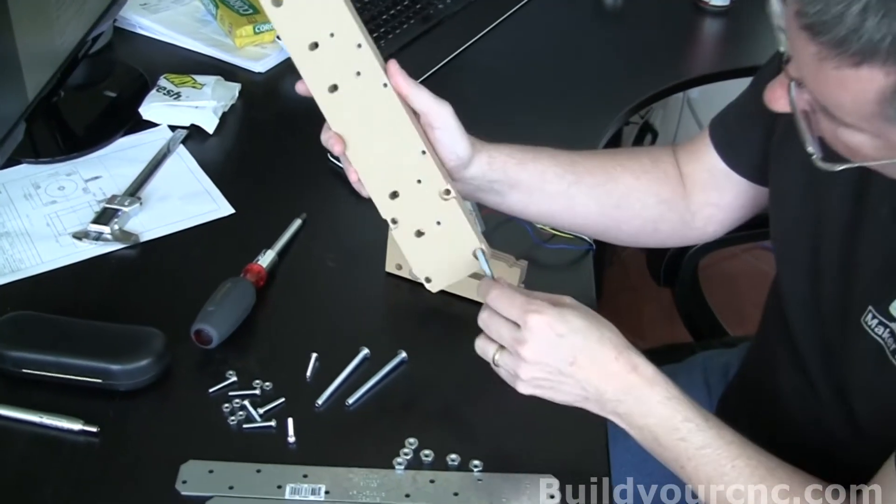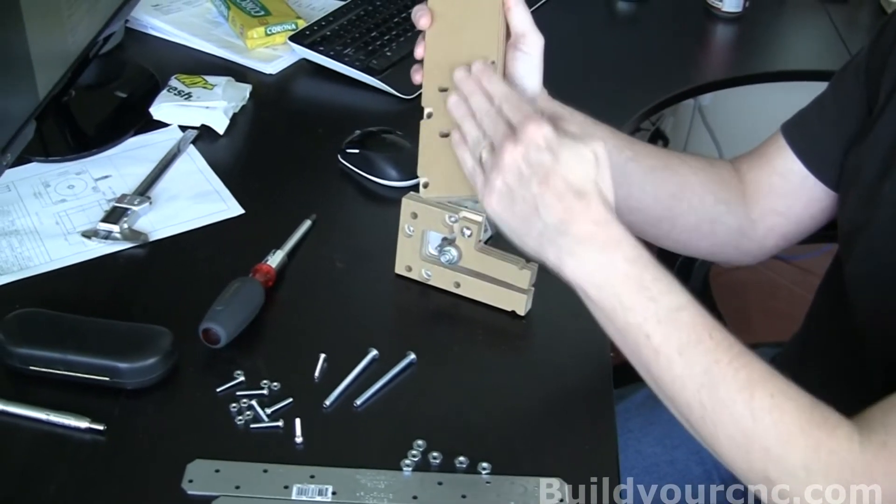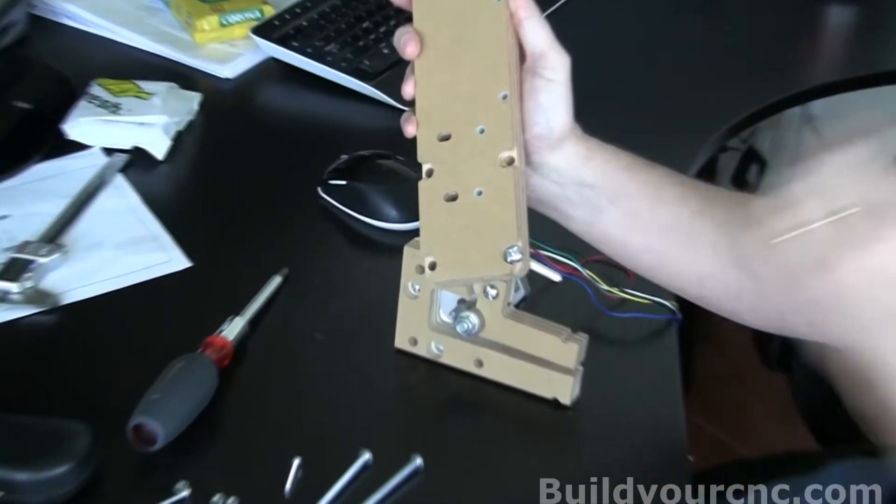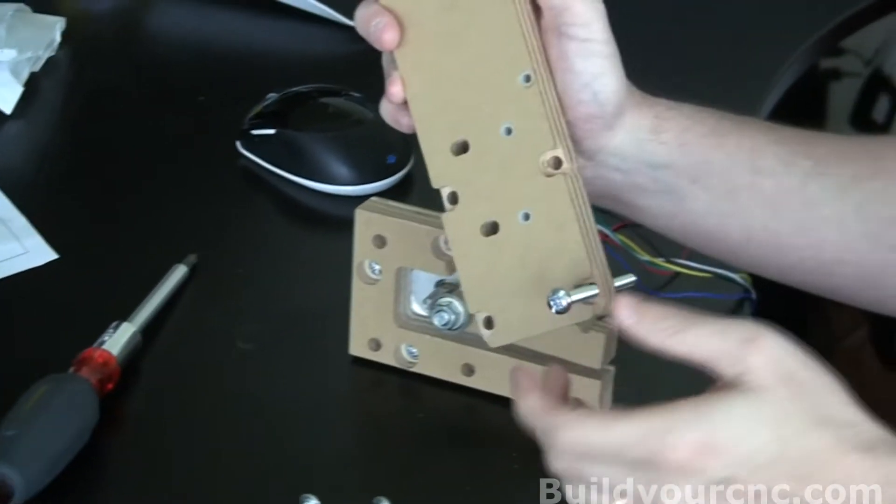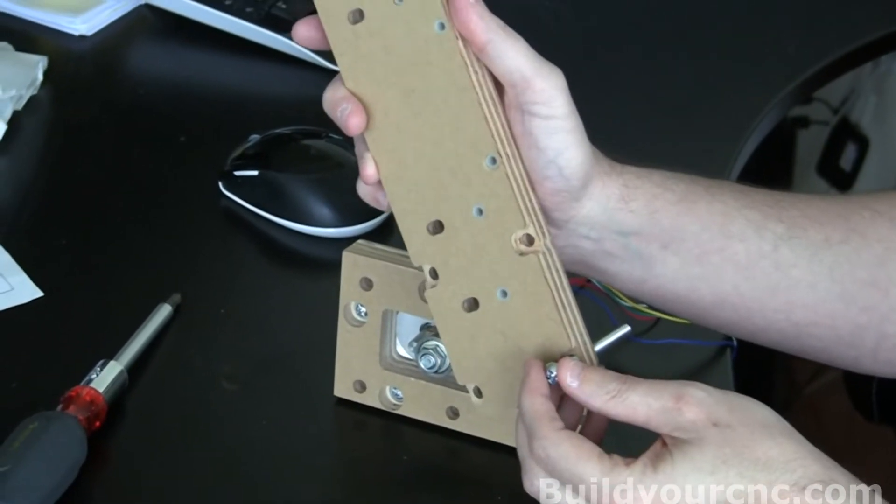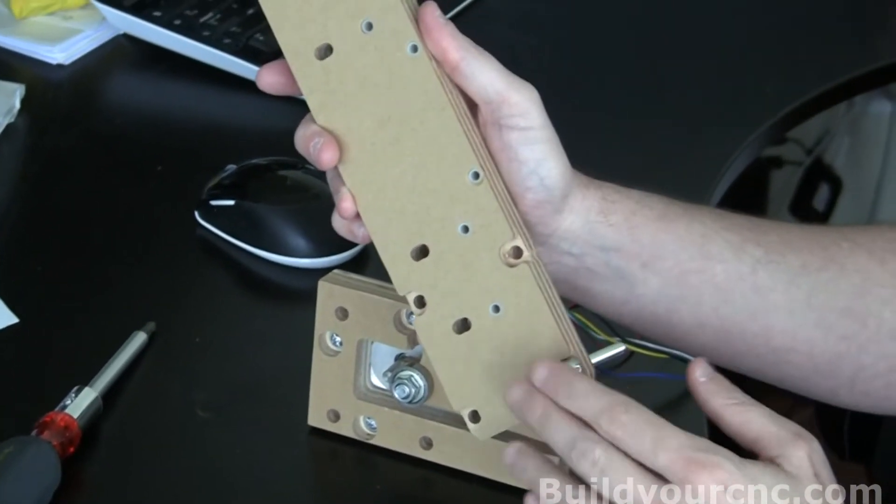When you put the screw in, you'll notice it's flat. So the rail will be able to be placed on top of that without a problem. This is the reason why we need to put the screws in first, because the rails will be covering the holes where we need to put these screws.